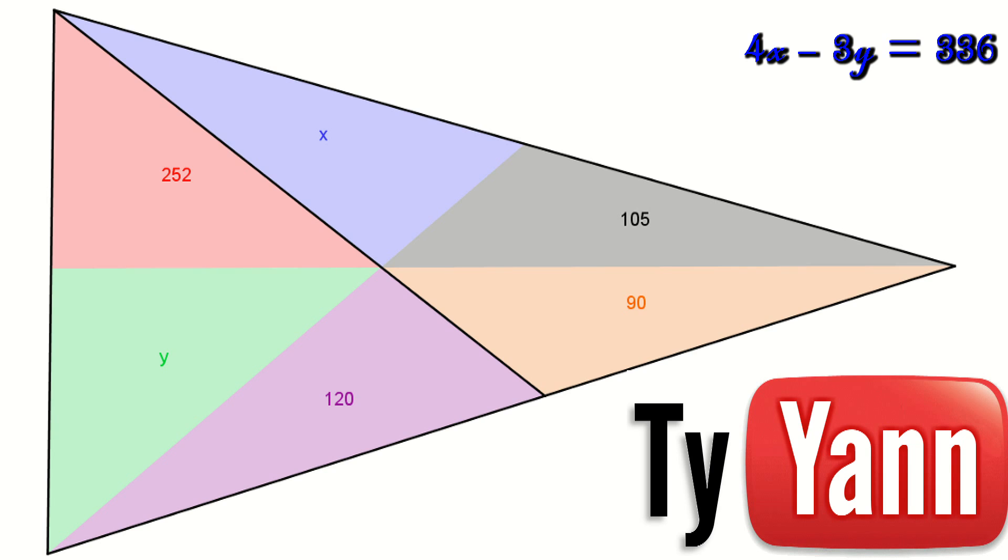The second part is by doing the same but not with the same triangles. If we draw this black line in the middle, then we get two other triangles. One, of course, with an area y plus 252 plus x, and the other with an area 120 plus 90 plus 105.